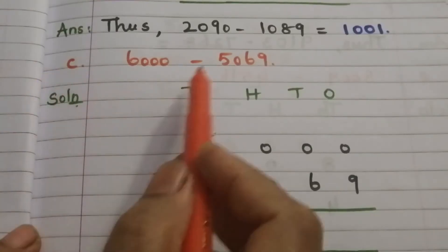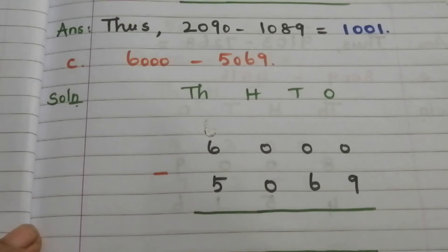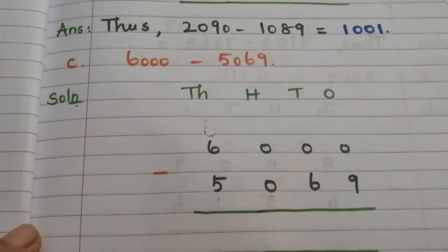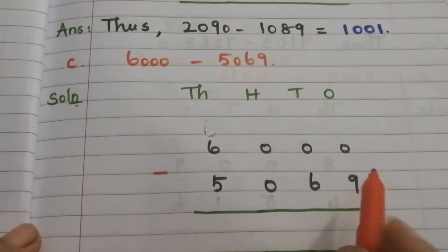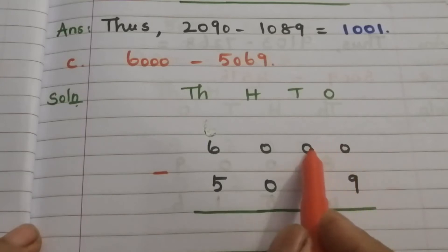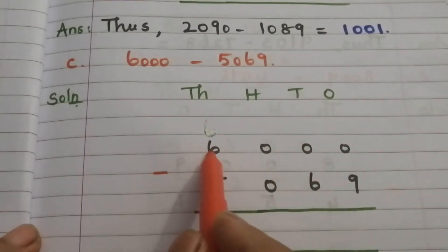Part C: 6000 minus 5069. After writing these two numbers vertically, we start to subtract from the ones place. We can't subtract 9 from 0, so we borrow from the next place. Here also 0, so we move to the next place. Here also 0, so we move to the thousands place.